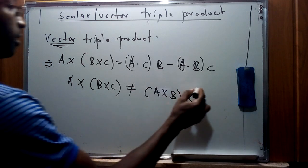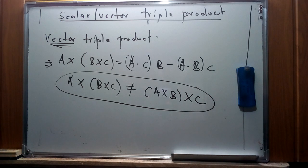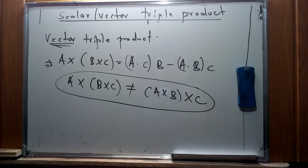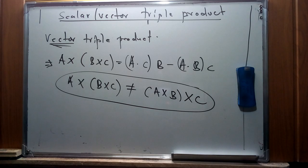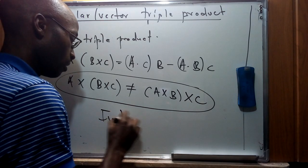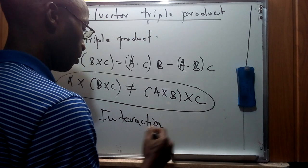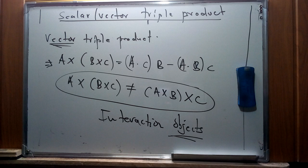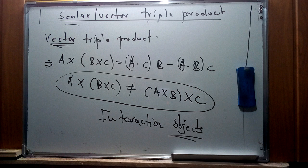We have decided to discuss this topic of scalar and vector triple products because, as I said, it finds wide applications in trying to find forces, especially in physics — moments, and other quantities that may result from interaction of multiple objects which can be represented as vector quantities. The second application is that the scalar triple product is used to find the volume of a parallelepiped.